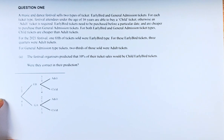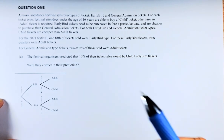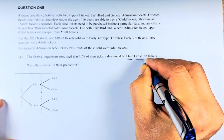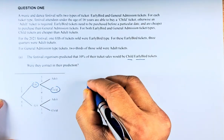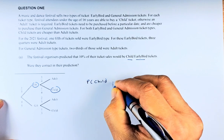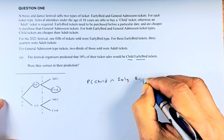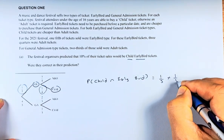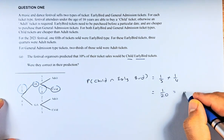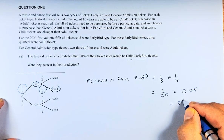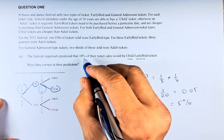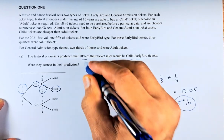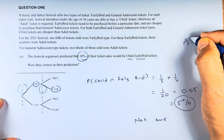So you need to draw this probability tree before we can do the question. The festival organiser predicted that 10% would be child early bird. The probability of child and early bird is one-fifth times one-quarter, which equals 1 over 20, or 0.05 — that is 5%. They claimed it was 10%, so it is not true, because the probability is only 5%.